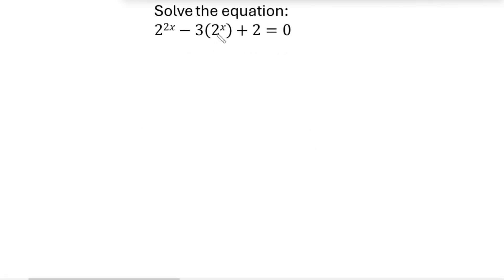Let's solve this equation. This is an exponential equation, we have to solve for x. So we have here 2 to the power 2x, and here 2 to the power x. The base is 2 and the exponent is 2x, so we're going to use a lot of indices to simplify this.